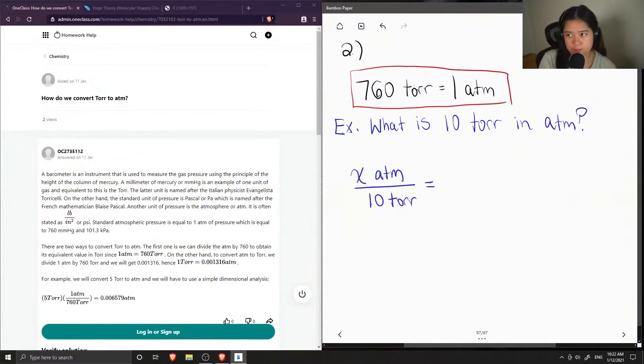And now I like to write my conversion factor, which will be in the same order as the numerator and denominator. So what I'm looking for will be on top. So 1 ATM will be on top, and 760 TOR is my denominator.